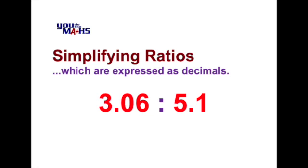Let's have a look at another case where in this instance we've got one number expressed to two decimal places and another one expressed to 1. Now because we must alter a ratio by multiplying or dividing both numbers by the same amount we have to look for the number with the most decimal places.